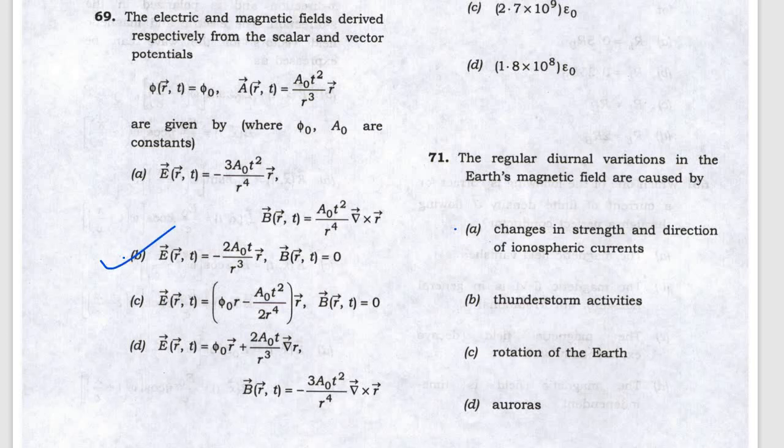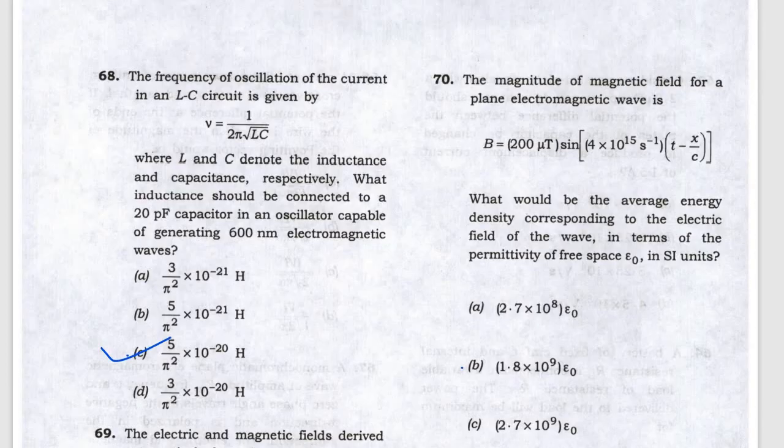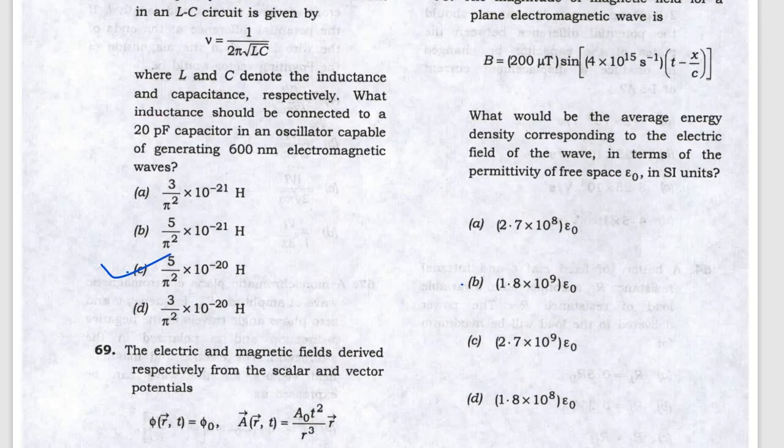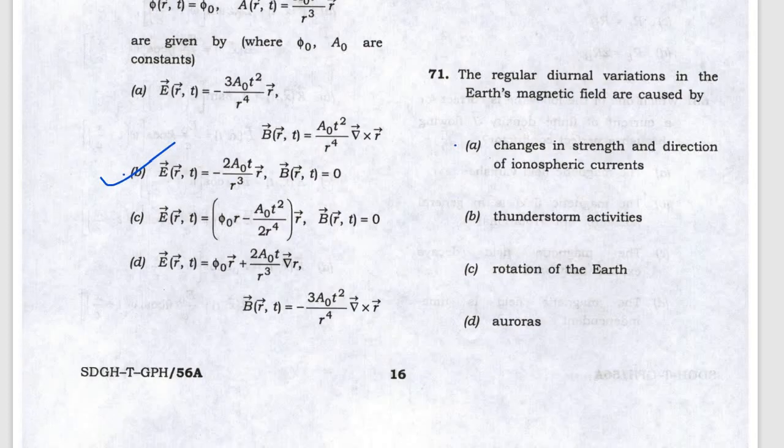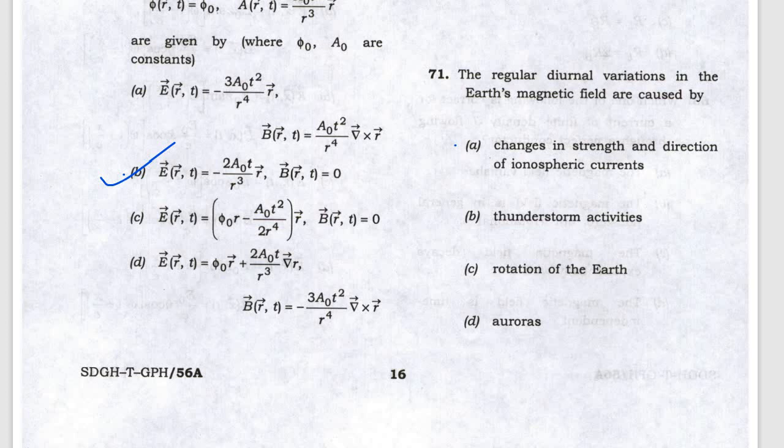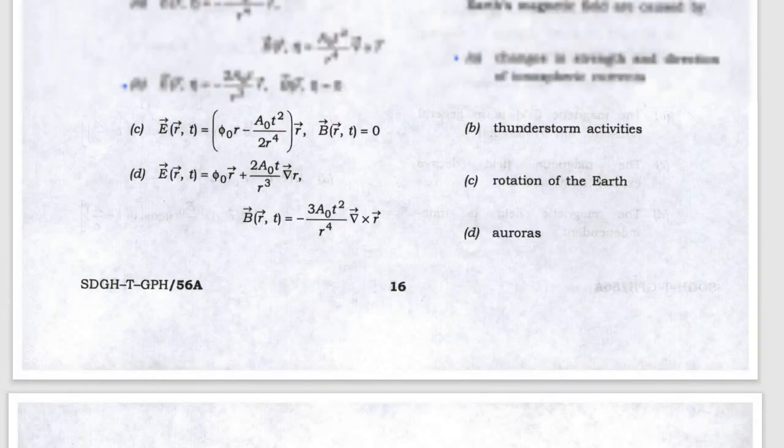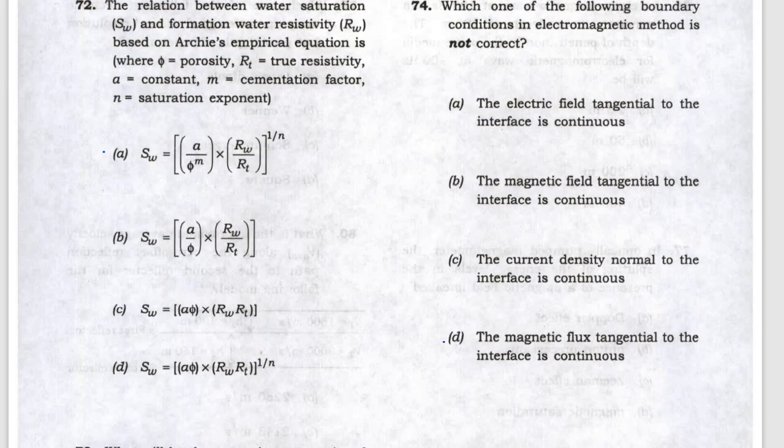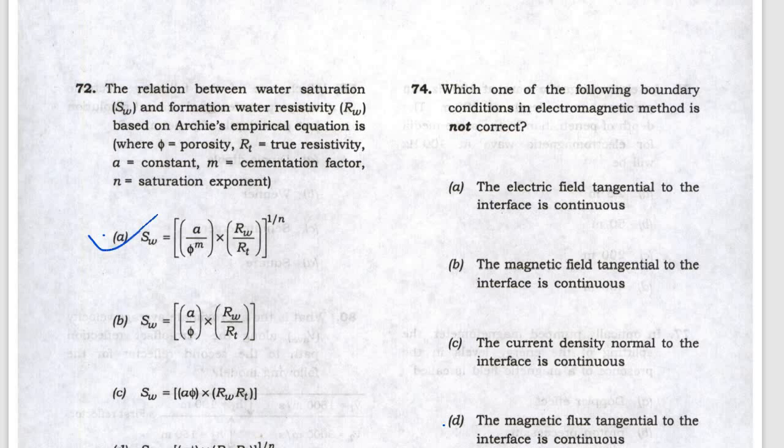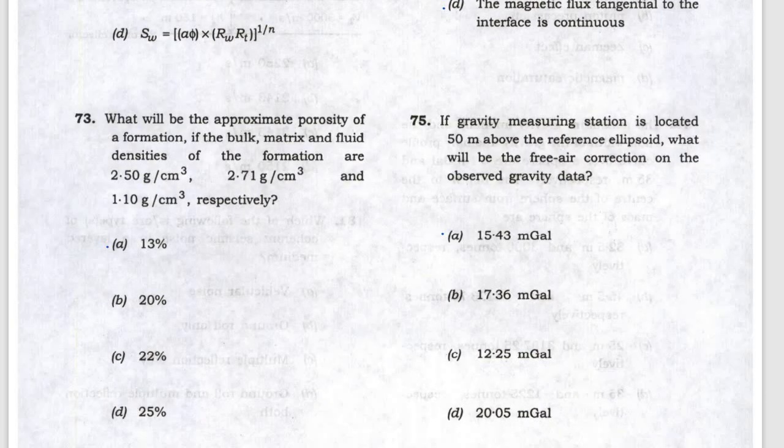Question 70 answer is B. Question 71 refers to the change in the strength and direction of the ionospheric current. The Arches equation answer is A.